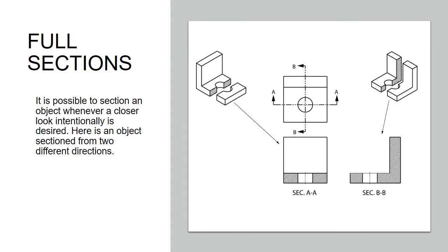Here's another couple examples of a full section, except we've done it two different directions. We've sliced our apple crossways and lengthwise. So we've got two section lines on this, A and B. Here's an object sectioned from two different directions, like a little clip or something, and we've cut it two different ways.